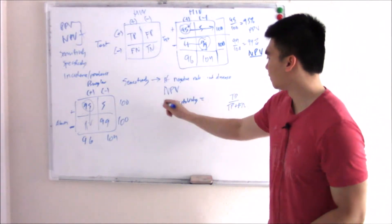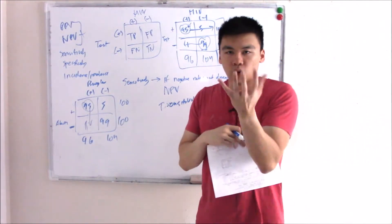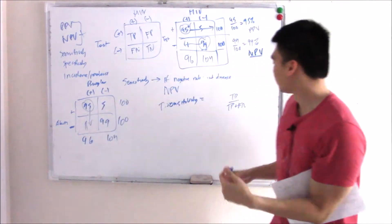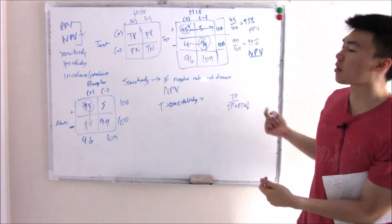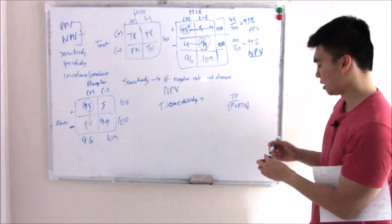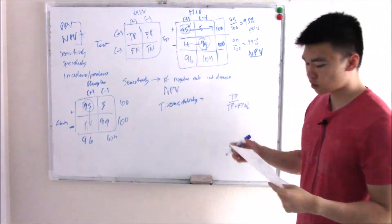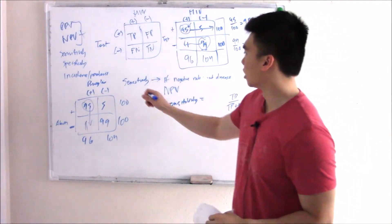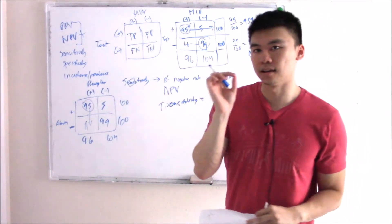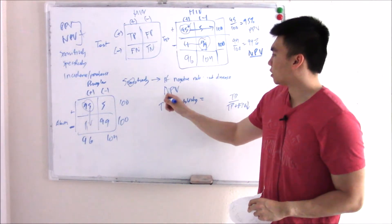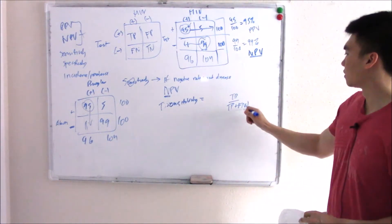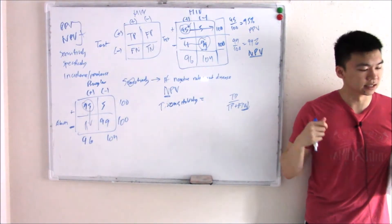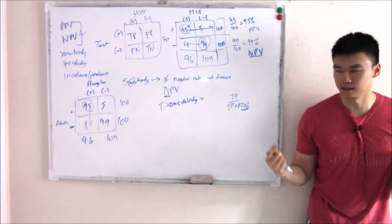The opposite is also true — if it's very sensitive and rings for whatever reason, you'll catch a lot of burglars and false negatives go down. To remember what sensitivity is related to: sensitivity has an N in the name. So it's related to negative predictive value — which has an N — and false negatives — which also has an N. Anytime you think of sensitivity, think negative predictive value and false negative.